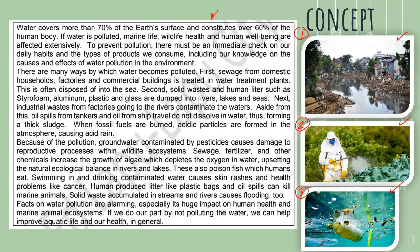Let's start. This is paragraph number one. Water covers more than 70% of the Earth's surface and constitutes over 60% of the human body. If water is polluted, marine life, wildlife, health, and human well-being are affected extensively. To prevent pollution, there must be an immediate check on our daily habits and the types of products we consume, including our knowledge on the causes and effects of water pollution in the environment. A paragraph is a group of sentences that contains the same topic.